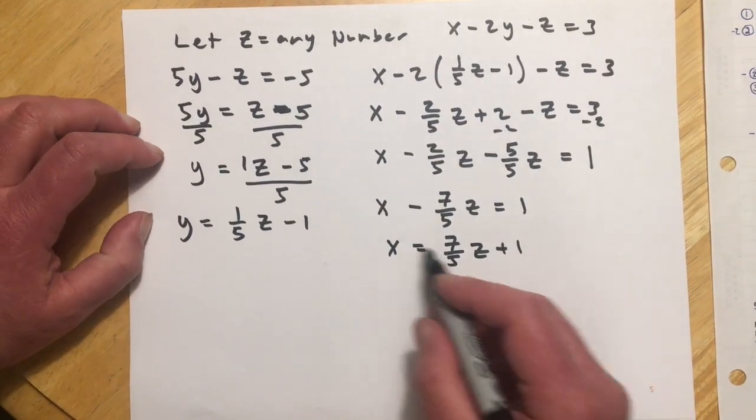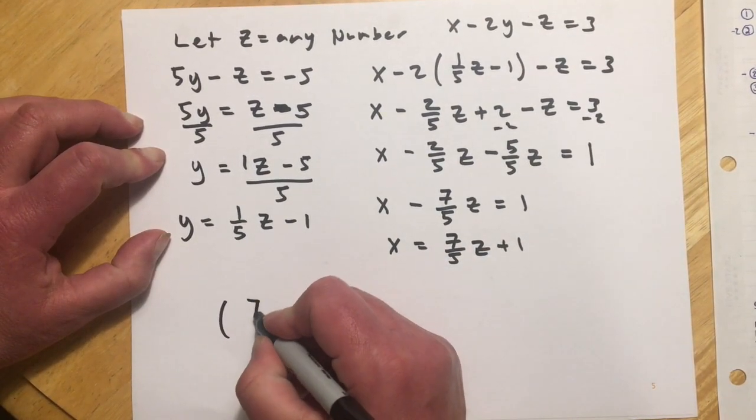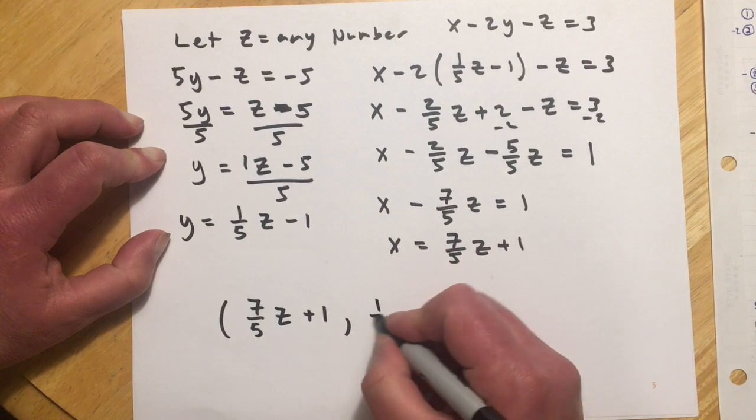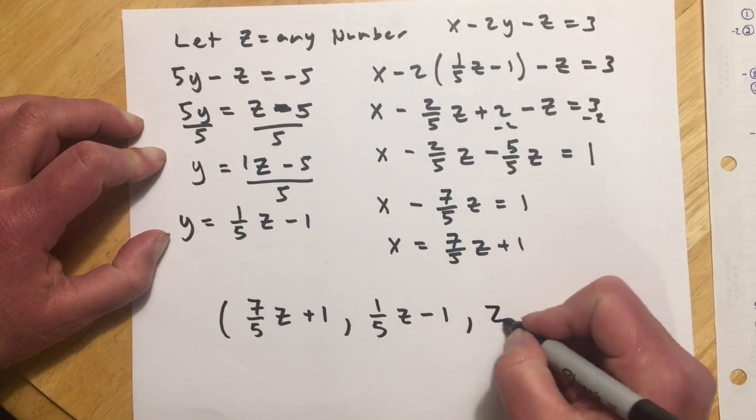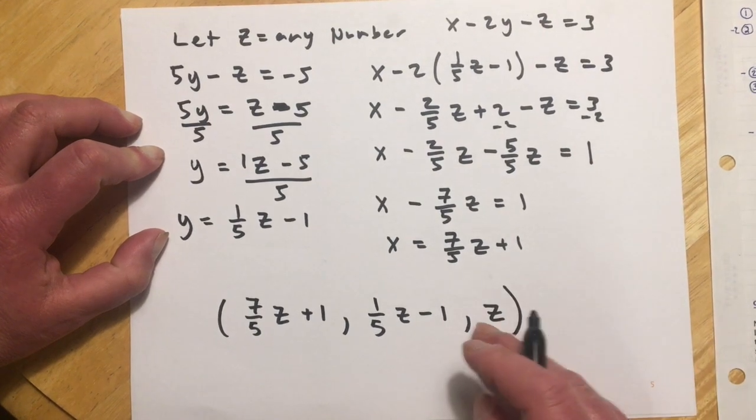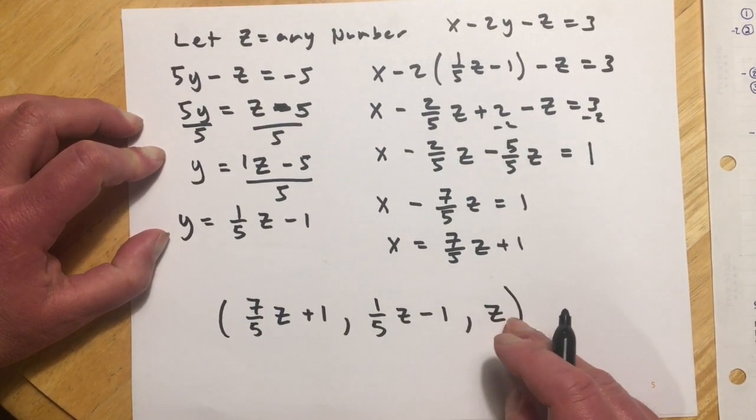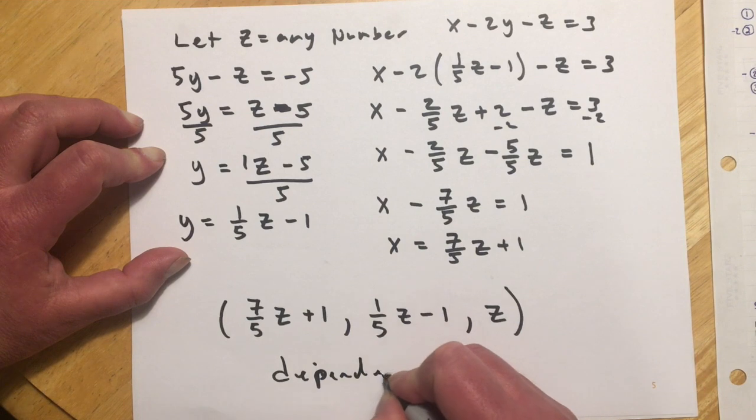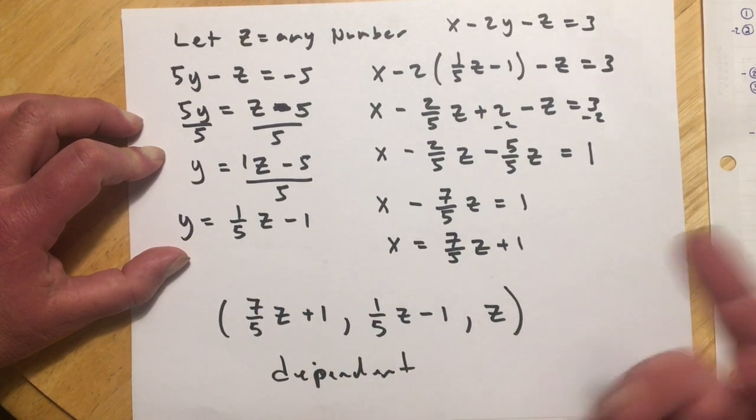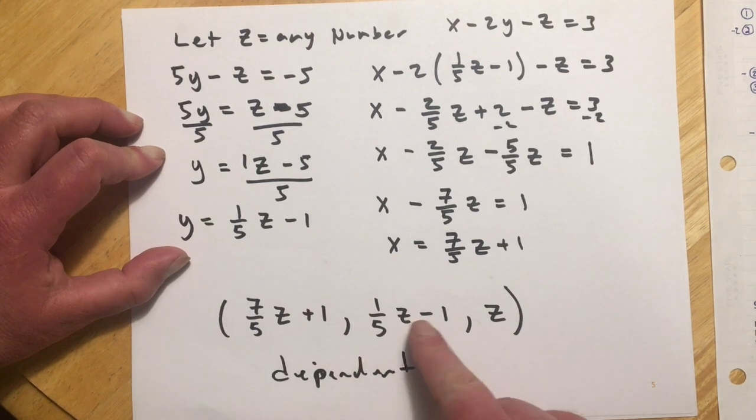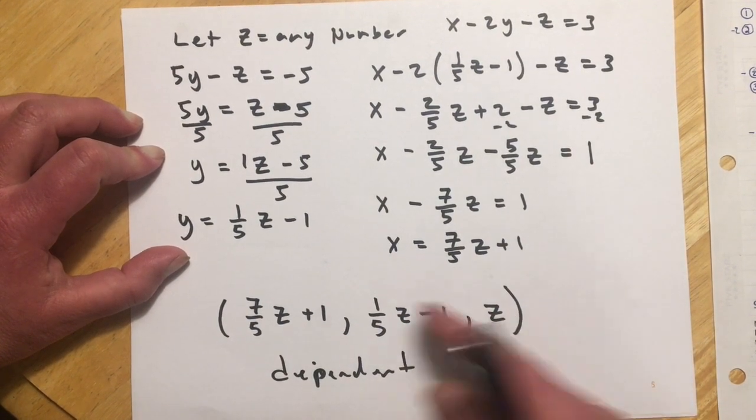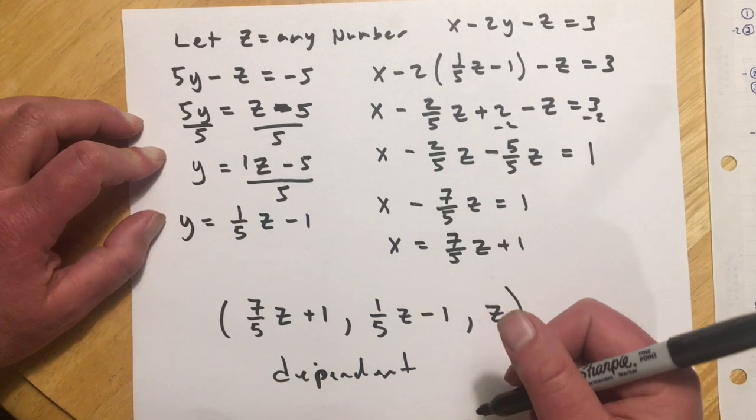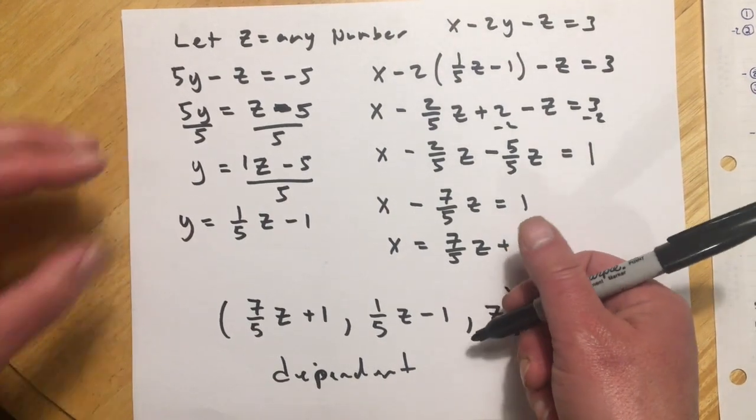So what that means, my solution set is x is this piece. Y is this piece. And then z is any number, so z is z. And so what we've done is we've written x and y in terms of z. So now they're dependent, and there's that name, dependent, on my choice of z. So if I pick z equals zero, for instance, then x is 1, and this would drop out, and y is negative 1. So I can pick any value for z and then generate every point of intersection between these three planes.